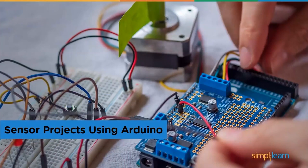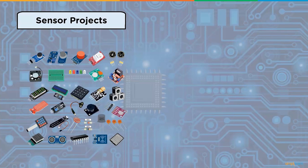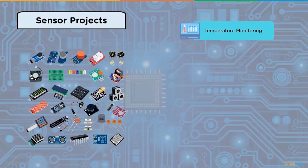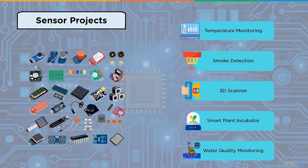Sensor projects using Arduino: one of the aspects that make Arduino so valuable is the simplicity with which it can retrieve sensor information. Sensors transform a physical quantity into an electrical quantity. Types include light, motion, temperature, magnetic field, gravity, humidity, moisture, vibration, pressure, sound, and position sensors. Sensor projects include temperature monitoring, smoke detection using gas sensor, 3D scanner, smart plant incubator, and water quality monitoring system.